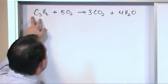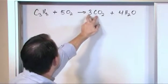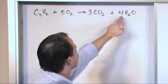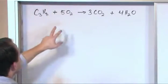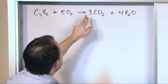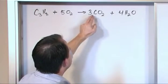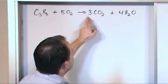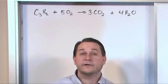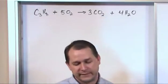Let's verify: 3 carbons on the left, 3 carbons on the right. 8 hydrogens on the left, 2 times 4 gives 8 hydrogens on the right. 10 oxygens on the left, and on the right you have 2 times 3 equals 6 (from CO2) plus another 4 (from H2O) gives you 10 oxygens. So this reaction is balanced.